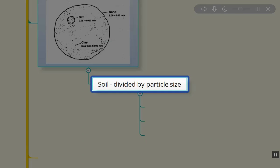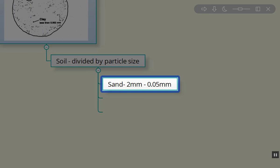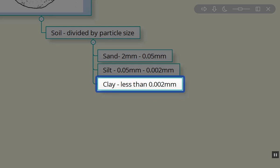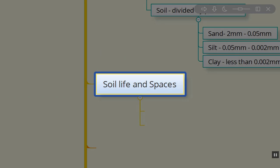Soil is broken down by its particle size. Sand is between two millimeters in size and 0.05 millimeters. Silt is between 0.05 millimeters and 0.002 millimeters in size. And then our clay, which is the tiniest of all, is less than 0.002 millimeters.